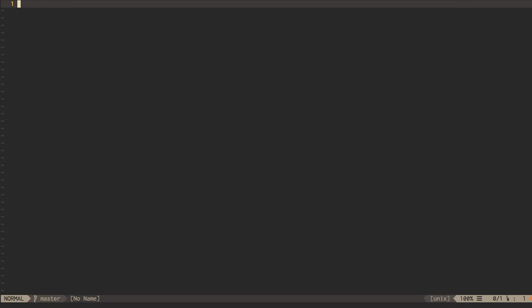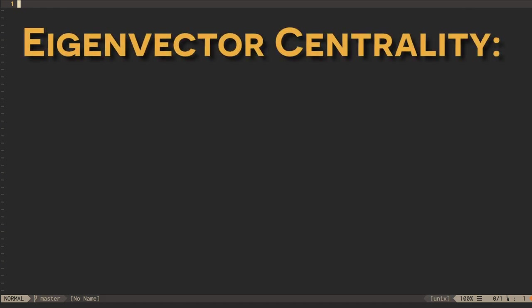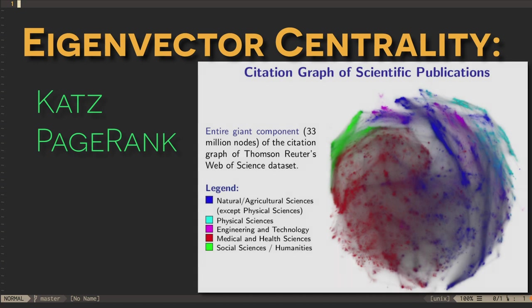Another family of centrality measures is eigenvector centrality. These measures attempt to model the influence of vertices within a graph. We won't get into the details of these algorithms, but in addition to social network analysis, they are important for assessing the importance of linked knowledge artifacts, like scientific papers and even web pages.